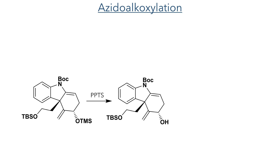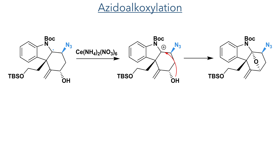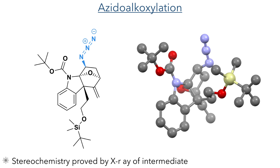The OTMS group was deprotected using PPTS to liberate the free alcohol, to allow it to take part in the next reaction which was an azidoalkoxylation. Reaction of cerium ammonium nitrate with sodium azide generates an azide radical, which is attacked by the endocyclic alkene, introducing the nitrogen necessary for the final product and leaving a radical on the tertiary carbon centre. This is further oxidised by another equivalent of cerium ammonium nitrate to generate a cation, which reacts in a manner similar to the hydroarylation reaction, being intramolecularly attacked by the hydroxyl group to once again form a bridging ether. During optimisation this intermediate was isolated and successfully crystallised, allowing the authors to confirm the stereochemistry using X-ray crystallography.